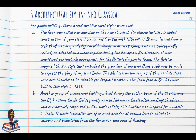Three architectural styles were adopted by the British for monumental architecture in India. The first was the neoclassical, based on the grandeur of imperial Rome — characterised by geometrical structures fronted with lofty pillars. Examples include the Town Hall and the Elphinstone Circle (later renamed Horniman Circle after an English editor who supported Indian nationalists), which was inspired by models in Italy and made innovative use of covered arcades to shield shoppers from Bombay's fierce sun and rain.